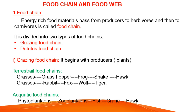Next, coming to food chain and food web. Energy-rich food materials pass from producers to herbivores and then to carnivores — this is called a food chain. Energy transfers from producers to herbivores, and herbivores to carnivores. Food chains are divided into two types: grazing food chain and detritus food chain.